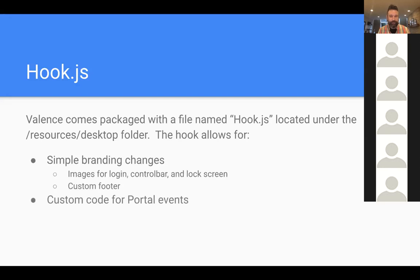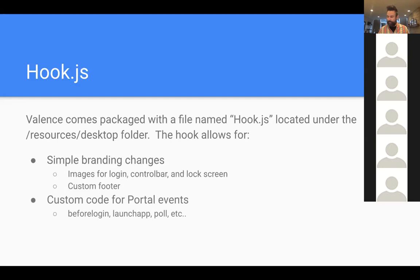The hook.js also has placeholders — it listens for portal events. Some example events would be before login and launch app. When the user hits the login button, the portal fires off an event called 'before login' and you can hook your own code in there. When an app is launched, it fires an event called 'launch app' and passes the app being launched, so you can change things or extract information.